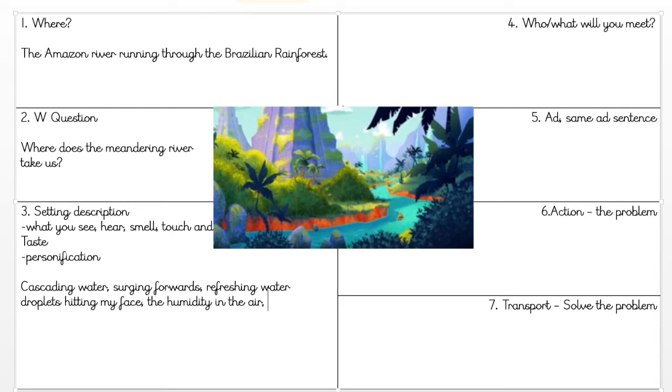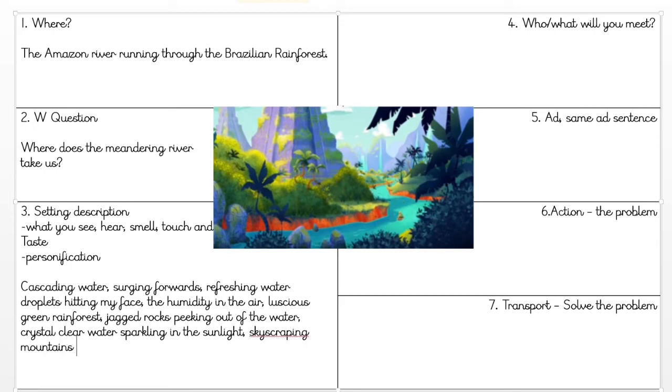I'm also going to start describing a little bit more of what I can see: the luscious green rainforest, the jagged rocks peeking out of the water. Oh, without knowing it, I have created a personification sentence there - they're peeking out of the water, it's a human quality. The crystal clear water, sparkling in the sunlight.